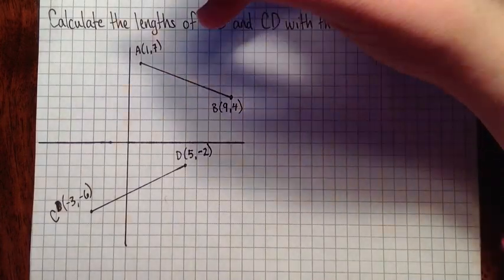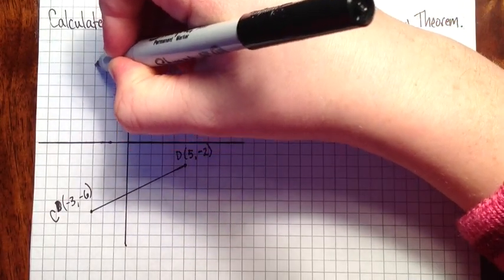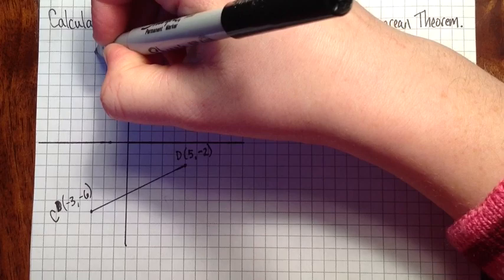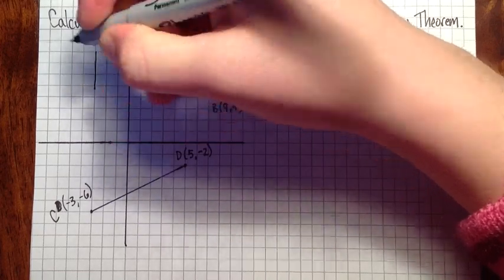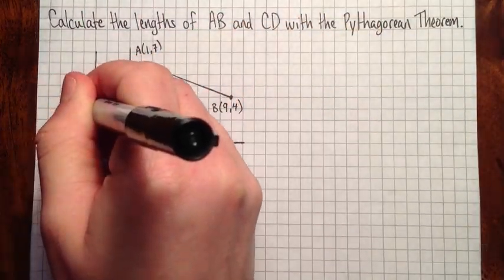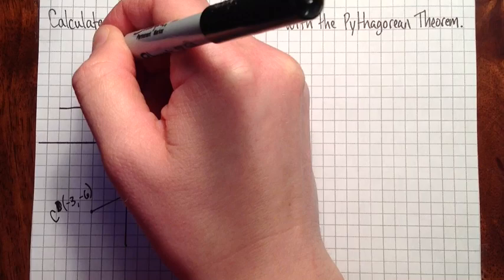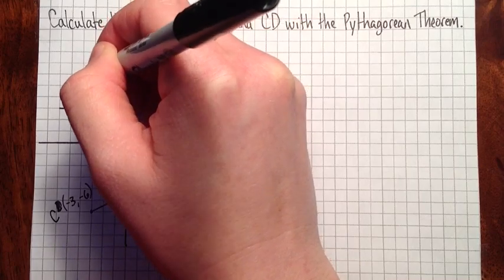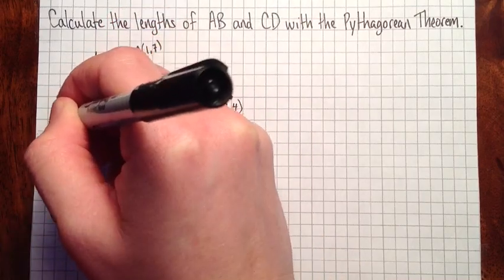So it's important to notice that if we have a vertical line segment, or a horizontal line segment, we can calculate the length just by counting the squares. We just go one, two, three, four... one, two.